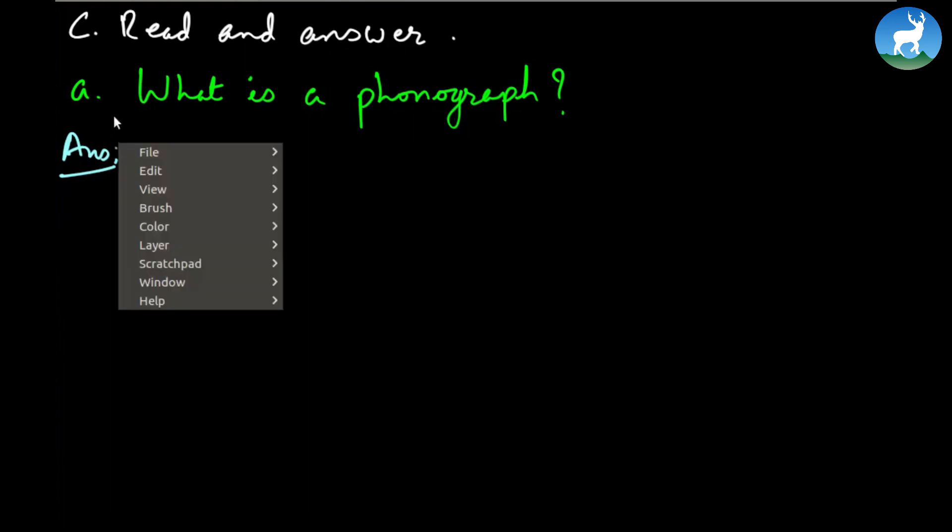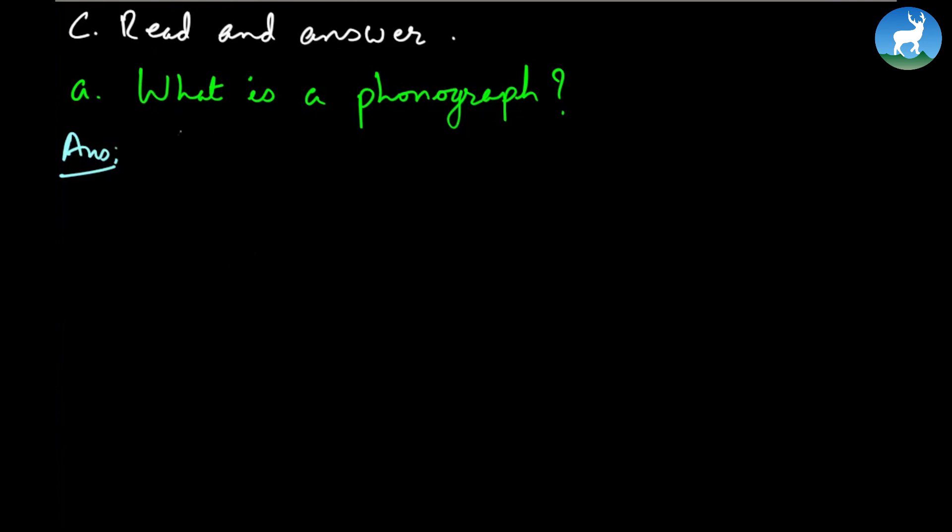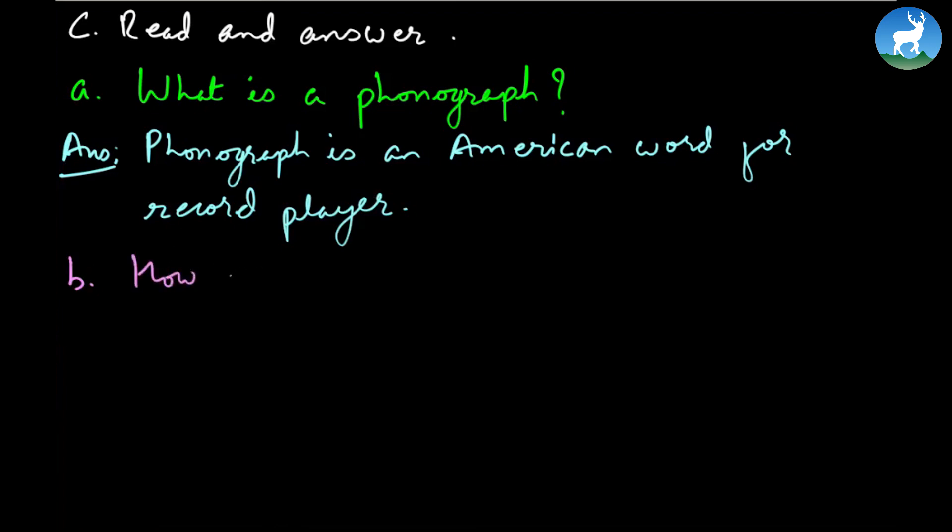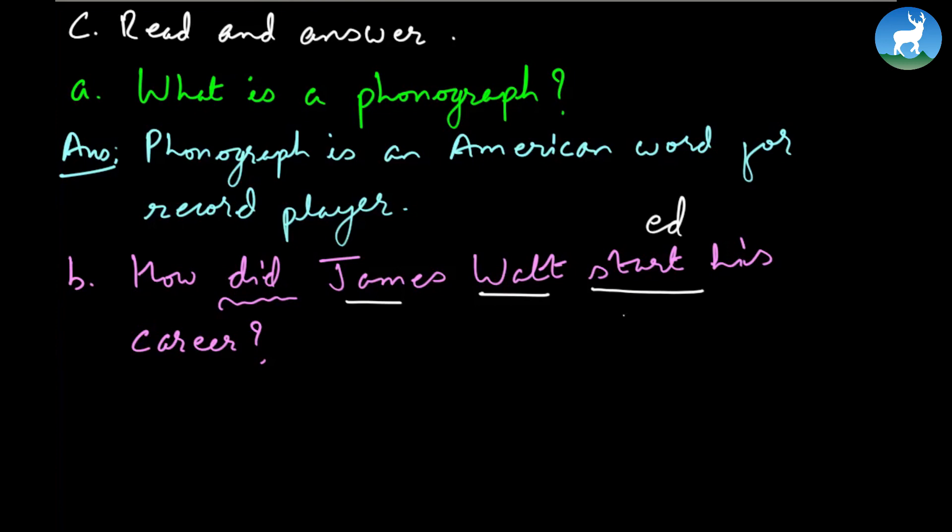Now we have here question and answer. Read and answer. Number one: what is a phonograph? So it's a very simple answer. If you look at the section on Thomas Alva Edison, you'd come across the answer. I'm just going to do number A and B; C, D you can do it as homework. And it says phonograph is an American word for record player. See, the answer is done. And look at number B now. And it says, remember the auxiliary verb here, simple past again: How did James Watt start his career? And you can, as you begin the answer, James Watt - make sure as you write it down - started. Take the start to simple past with past participle. Why? Because there is 'did' here. Take the answer to simple past. James Watt started his career. Read the passage under James Watt to figure out the answer.